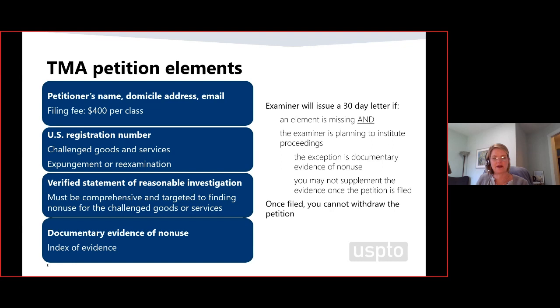If the two parties want to settle, that's their business, but we're not going to allow the petition to be withdrawn, because if there is a prima facie case of non-use, we want to address that. We have an interest as a USPTO in making sure that registrations we have already issued are accurate. For those asking: a Section 1 registration is based on use or intent to use; a Section 44 registration is based on Paris Convention filing; and a Section 66 registration is based on the Madrid protocol — generally foreign incoming applications filed via treaty mechanisms.